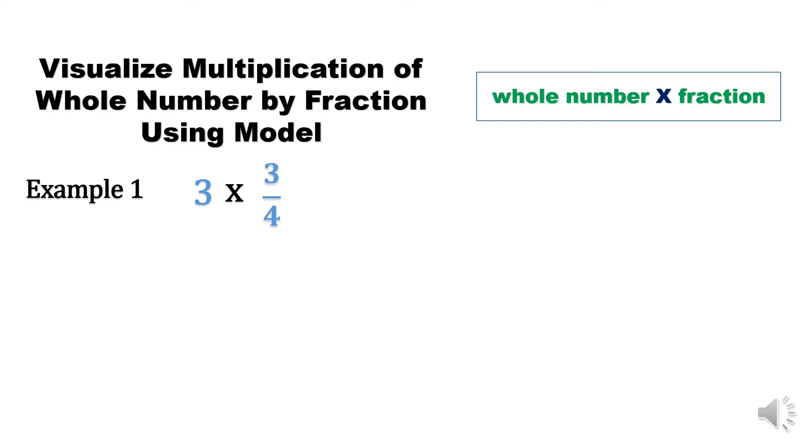3 times 3/4. I will show to you 3 groups of 3/4. When multiplying whole number by fraction, multiply whole number by numerator. So 3 times 3 equals 9. Copy the denominator 4.